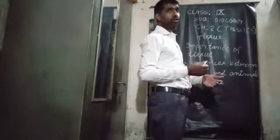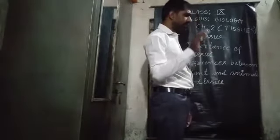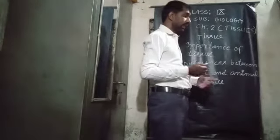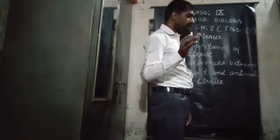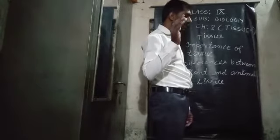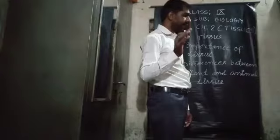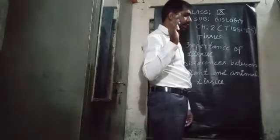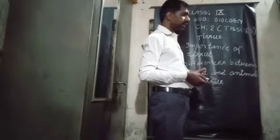Many nerve cells present in the body coordinate to transmit nerve impulses to the entire body. In plants, there are special cells like xylem and phloem which help in the conduction of food and water to other parts. In multicellular organisms, there is a division of labor where each group of cells performs specialized functions. When groups of similar types of cells perform specific functions, they are called tissues.